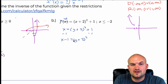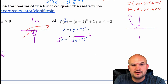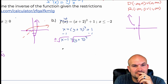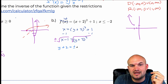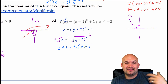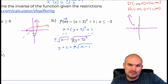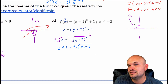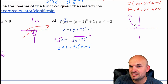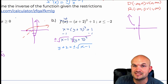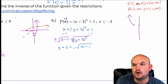Now I'll take the square root of both sides. When you introduce the square root, you get the plus or minus, so y plus 2 equals plus or minus the square root of x minus 1. We don't want the plus or minus because that won't produce a function. Since our restriction is to the more negative values to the left of the vertex, we're going to include the negative root.